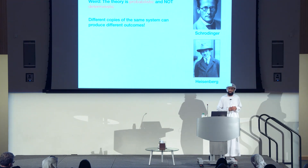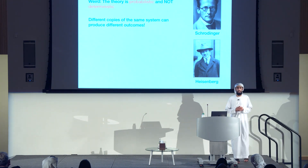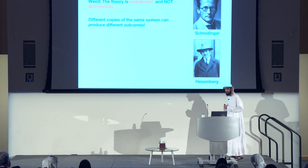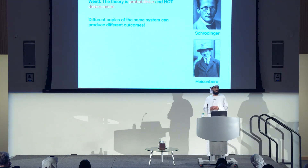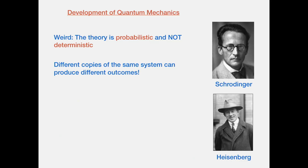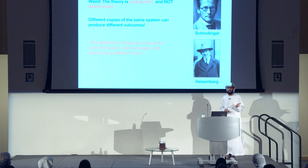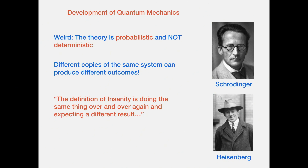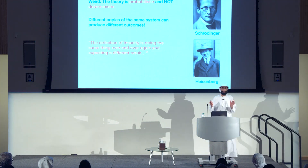This tells you that any theory of nature needs to be probabilistic and not deterministic. You can have different copies of the exact same system that produce different outcomes, different results. Someone said that's the definition of insanity — doing the same thing over and over and expecting different results. Well, in quantum mechanics, we're all crazy.